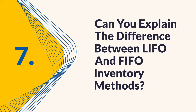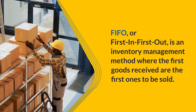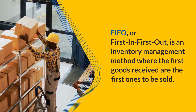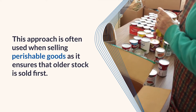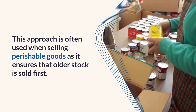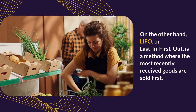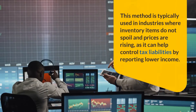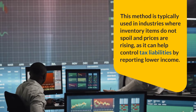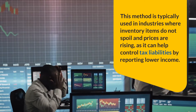Question 7: Can you explain the difference between LIFO and FIFO inventory methods? FIFO, or first-in-first-out, is an inventory management method where the first goods received are the first ones to be sold. This approach is often used when selling perishable goods as it ensures that older stock is sold first. On the other hand, LIFO, or last-in-first-out, is a method where the most recently received goods are sold first. This method is typically used in industries where inventory items do not spoil and prices are rising, as it can help control tax liabilities by reporting lower income.